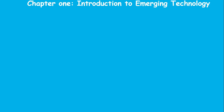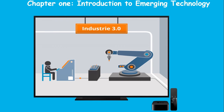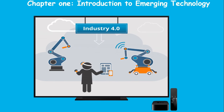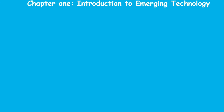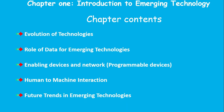Chapter one is Introduction to Emerging Technology. The introduction covers the industrial revolution and how it relates to today. In the next decade, we are going to get into the next chapter of our topic. We will show how we believe we will improve the future of communication technology — including mechanical devices, routines, and human-to-machine interaction.